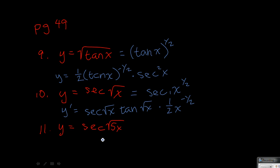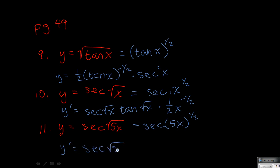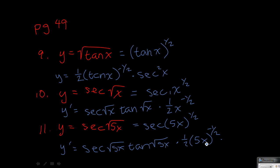On the last one, I'm going to rewrite it. So if I take the derivative, we get secant tangent — my angle is root 5x. Now we take the derivative of the inside, which is going to be 1 half times 5x to the negative 1 half. And now we have one more inside to take the derivative of because that's 5x instead of 1x, so it's going to be times 5.